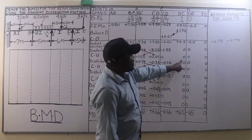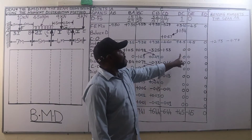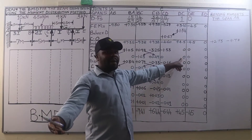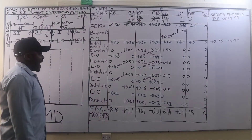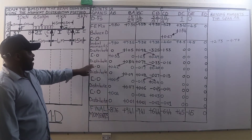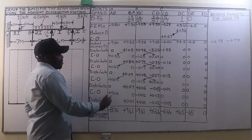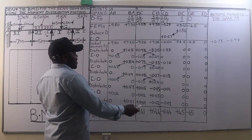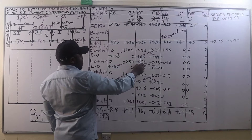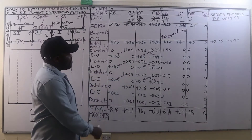We are not going to carry over for joint D again because we have already balanced it — carrying over again would make it unbalanced. After carrying over we distribute again. On joint B we have an excess moment of 0 plus 1.63, giving positive 1.63.